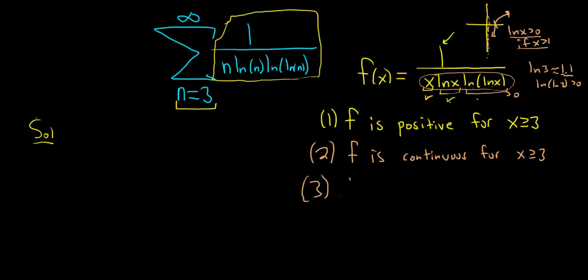Three. The last one is to note that f is decreasing for x greater than or equal to 3. So the bottom is always getting bigger, you know, monotonically. So this fraction, it's just 1 over something that's getting bigger. So it's going to eventually get close to 0 and do so in a very monotonic way. So all three things are satisfied, all three conditions. So the integral test applies.